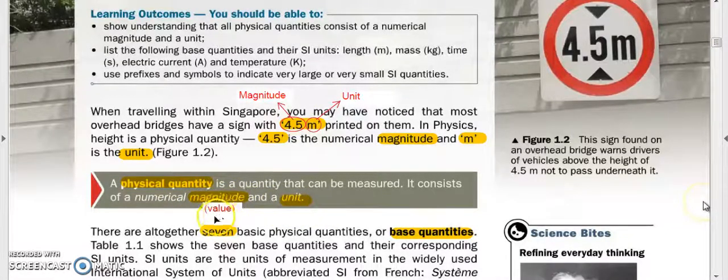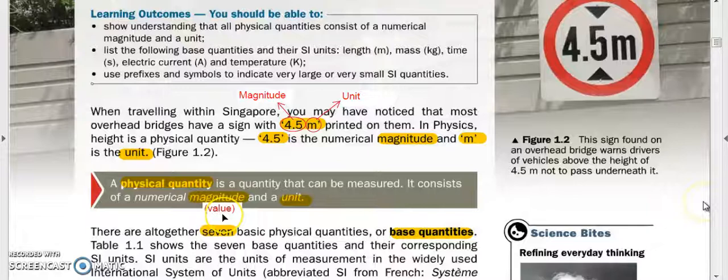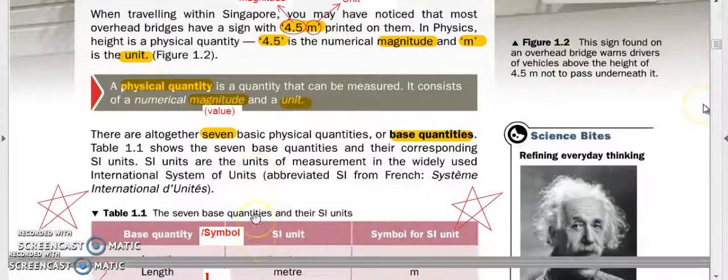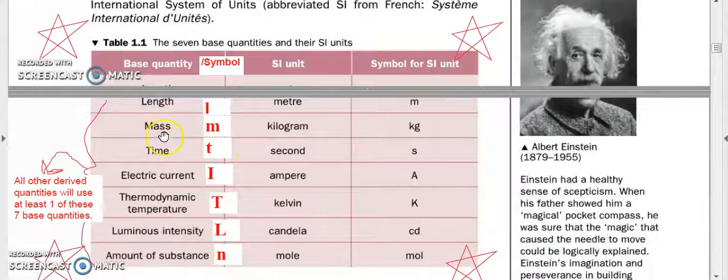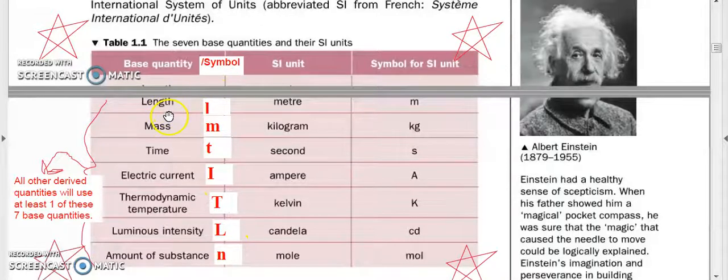How many base quantities do we have? We've got seven base quantities. These are the seven - do write in this symbol for each. For example, length stands for small letter L, mass stands for small letter M, and so on.